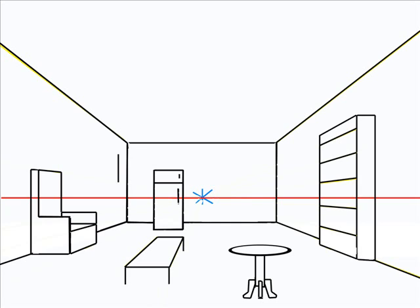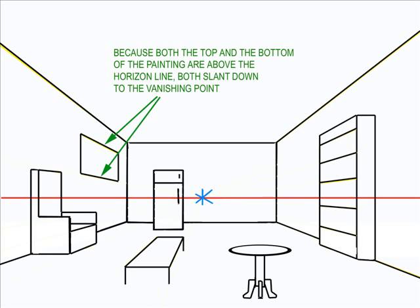To draw a picture hanging on the wall, I begin by making a vertical line. Then I line that up with the vanishing point to figure out the rest of the picture. Because both the top and the bottom of that picture are above the horizon line, both diagonal lines are going to slant down to the vanishing point.